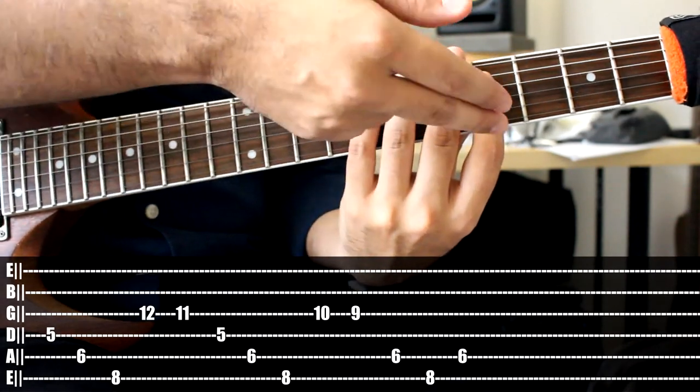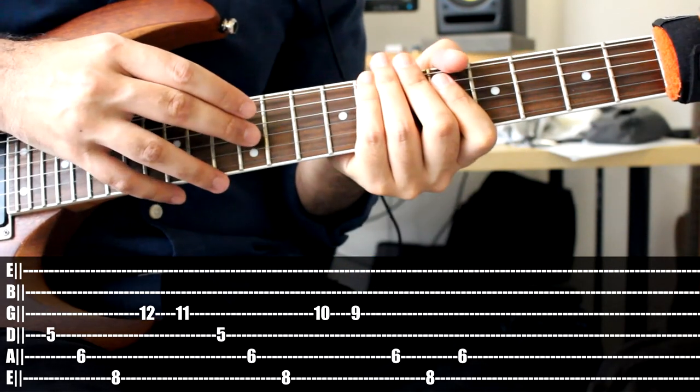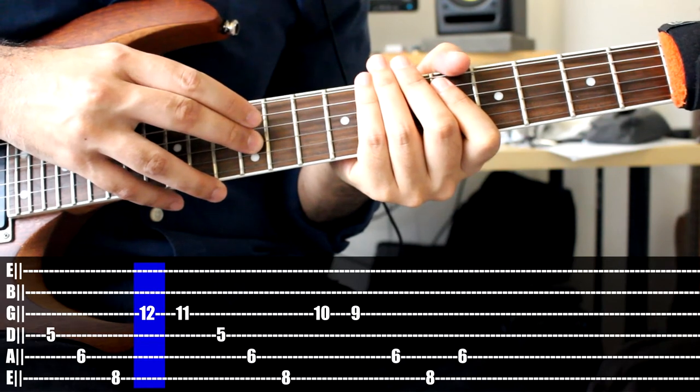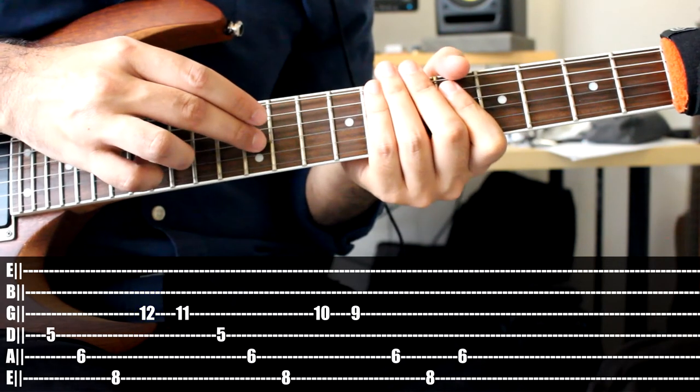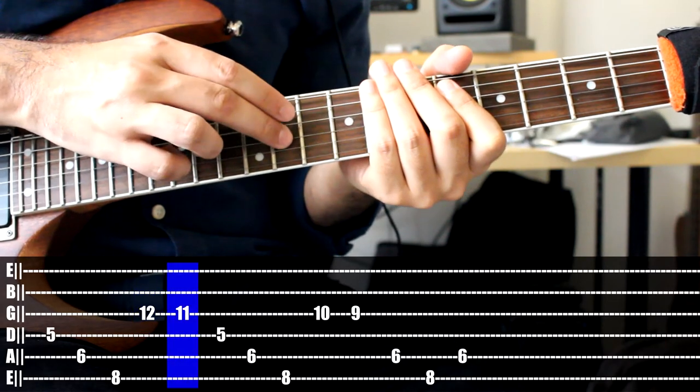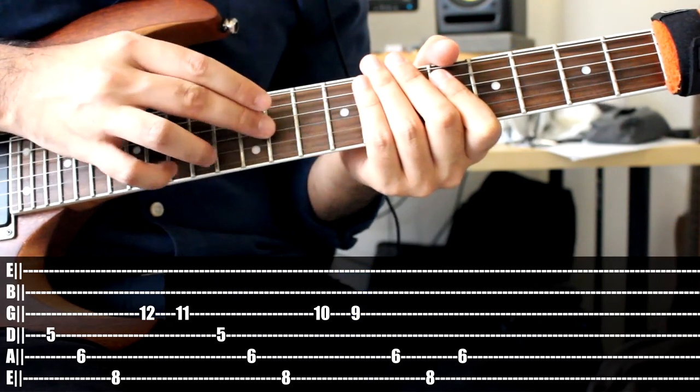And after each 3 notes, so that's 1, 2, 3, you're going to be tapping 12, 11, oh by the way this is on the G string, 12, 11, 10, 9. So it's kind of a 4 note chromatic run right there.